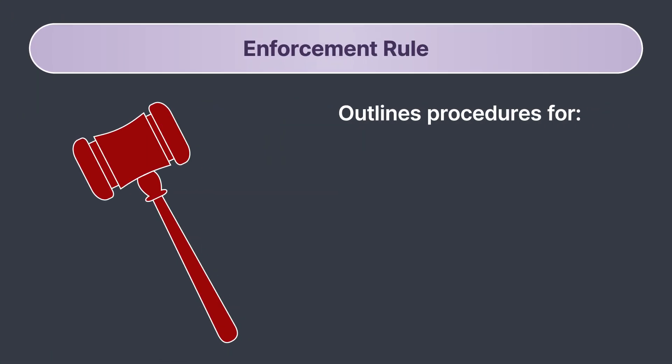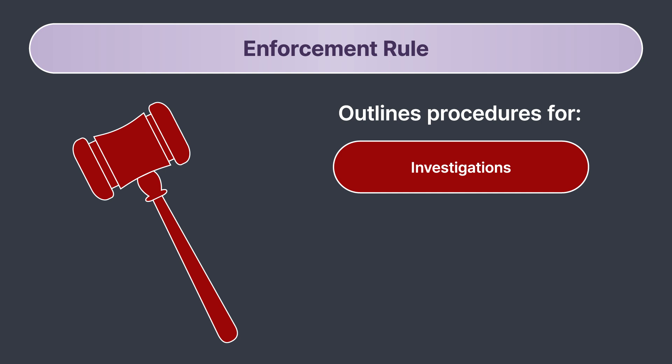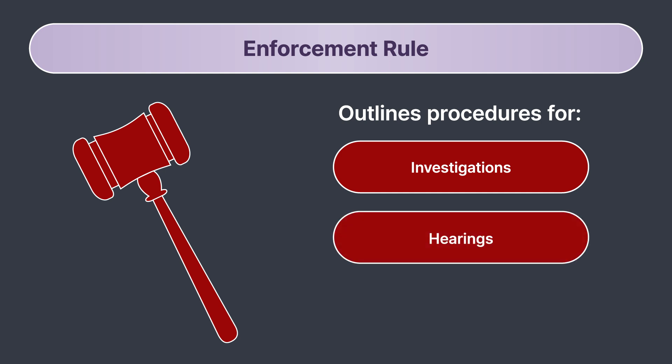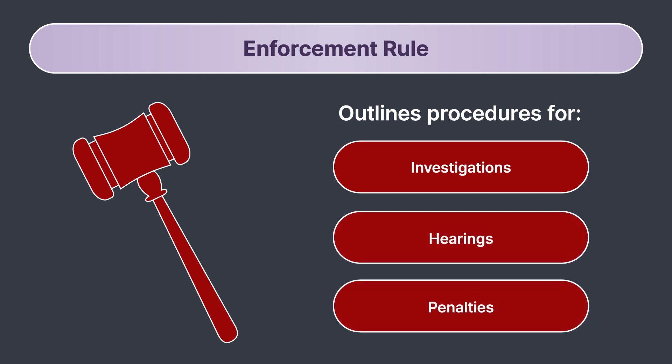The third rule is the Enforcement Rule. This provision outlines procedures for investigations, hearings, and the penalties for violations of HIPAA. This rule works to ensure there are consequences for institutions that fail to protect patient data. Facilities and/or providers face penalties based on the nature and extent of the violation and the harm resulting from it.